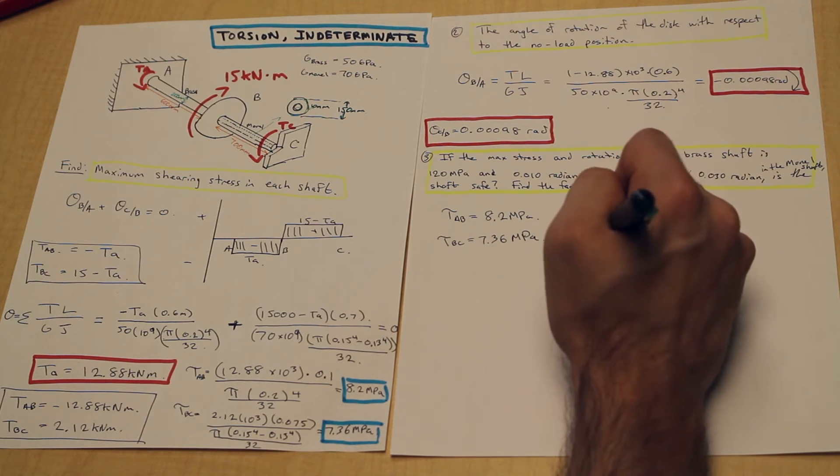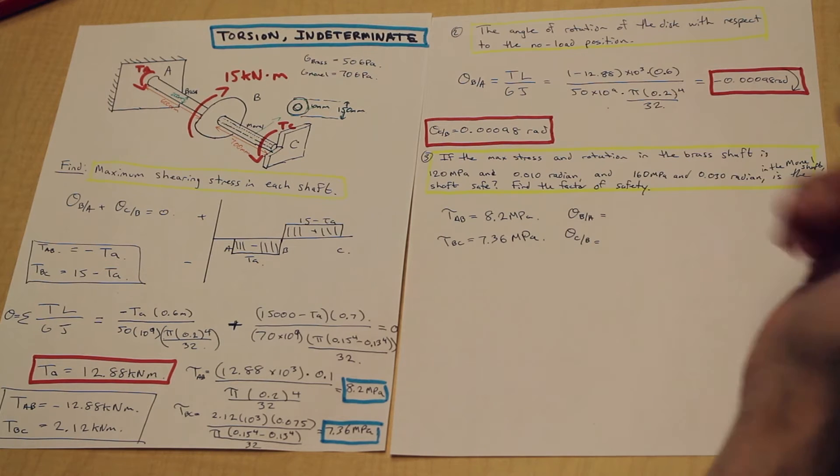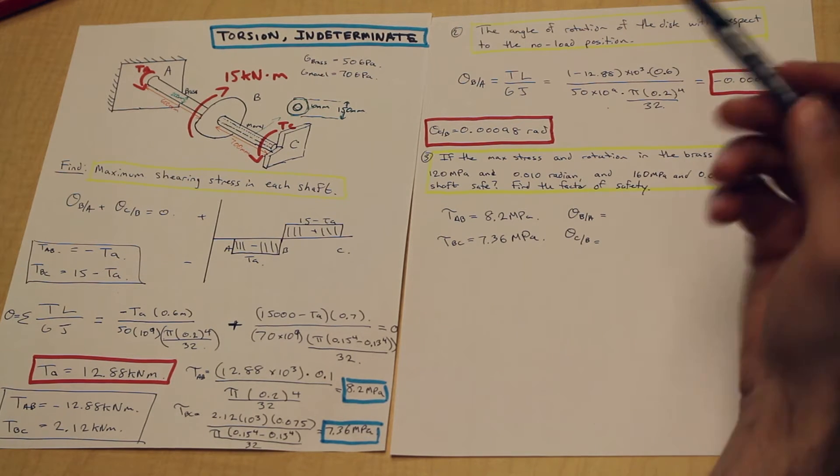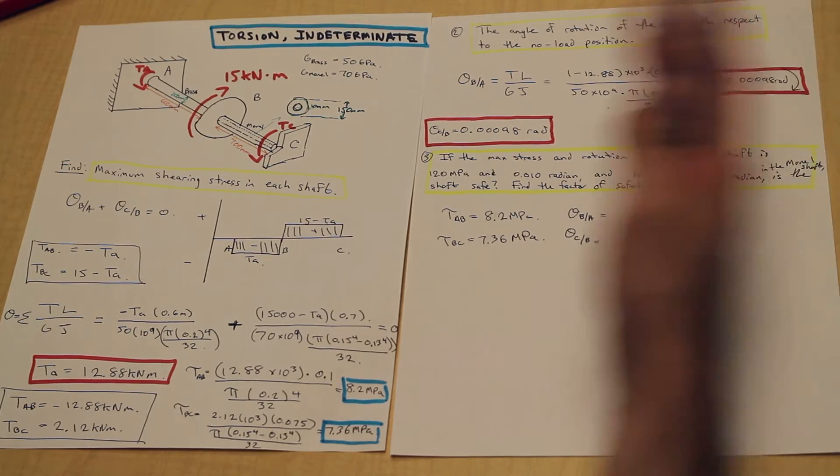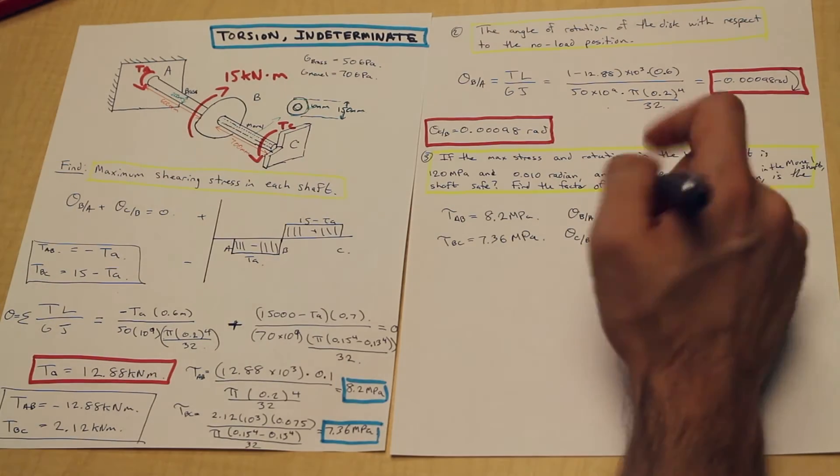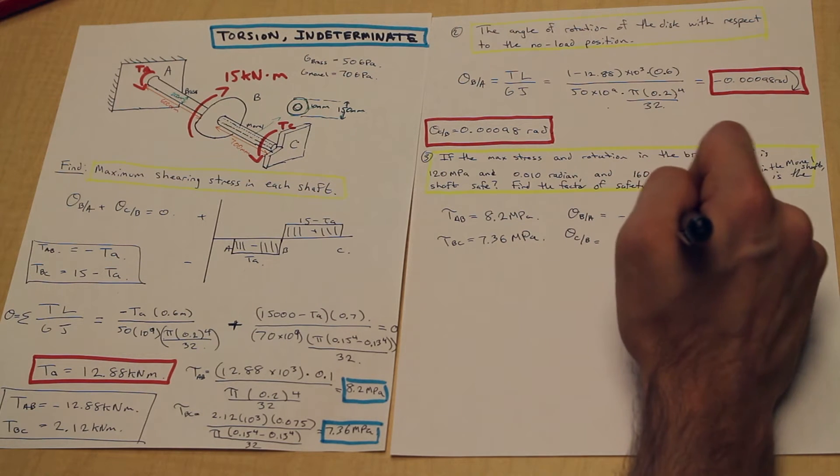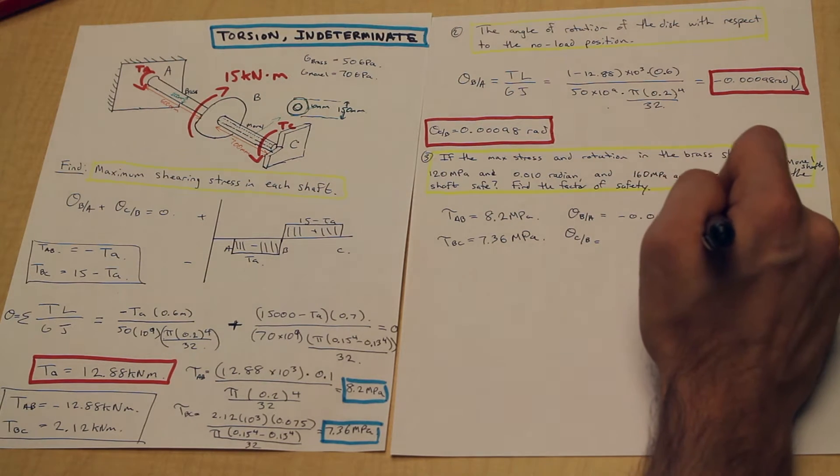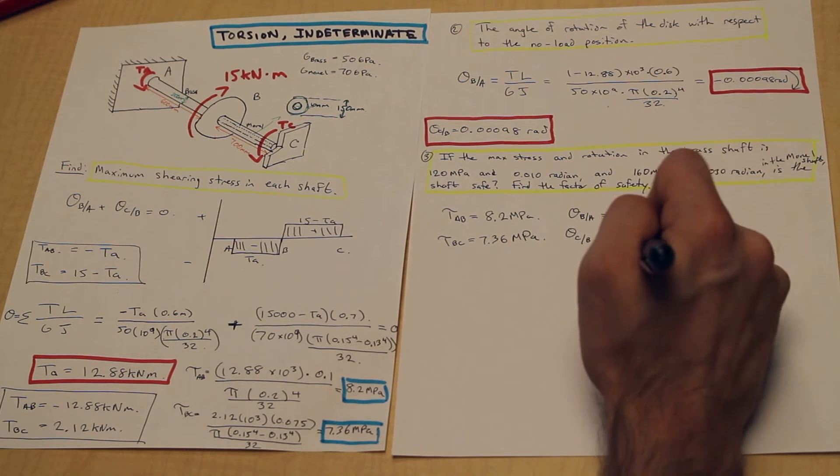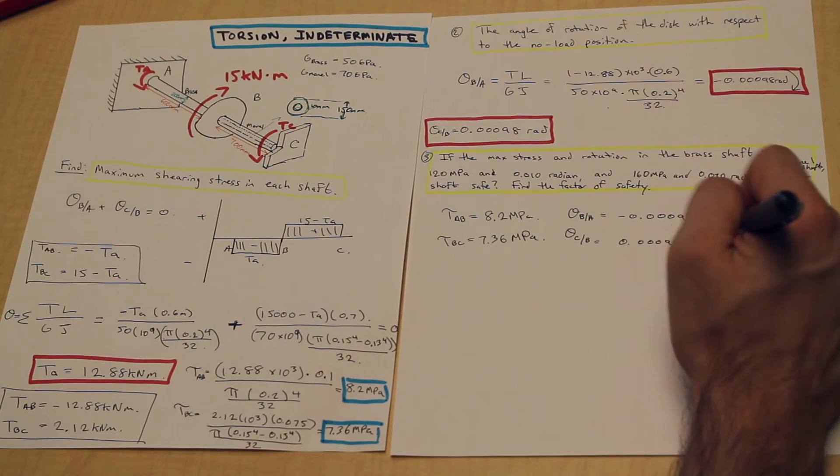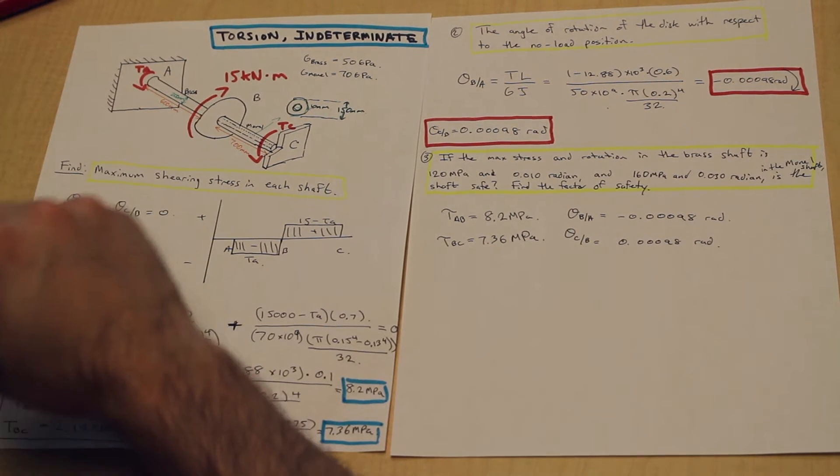What did we find for the angle of twist of both sections? Well, as we discussed before in that theoretical question, they're going to be opposite directions but the same value, and they have to be in order for us to solve a problem like this. We found theta B with respect to A and theta C with respect to B to be those values.